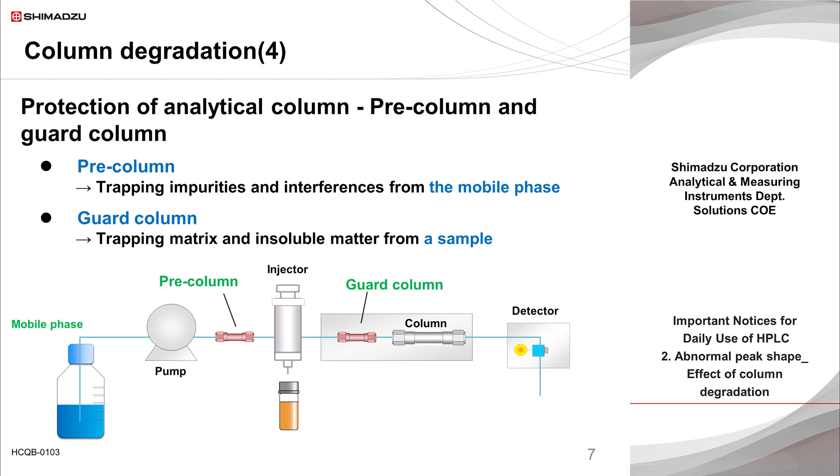In contrast, a guard column is installed between the sample injector and the analytical column. It is generally placed inside the column oven. Of course, the sample passes through the guard column and interacts with its packing material before being introduced into the analytical column. It is easier to understand the function of a guard column if it is considered as a detachable part of an analytical column, fixed at the column inlet where the packing material tends to deteriorate. Therefore, the guard column generally contains the same type of packing material as the analytical column of the same or smaller inner diameter and is shorter in length than the analytical column.